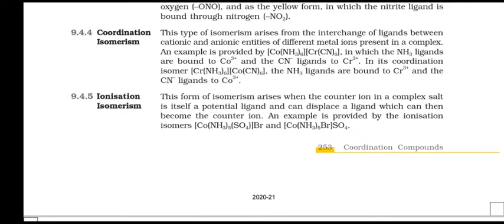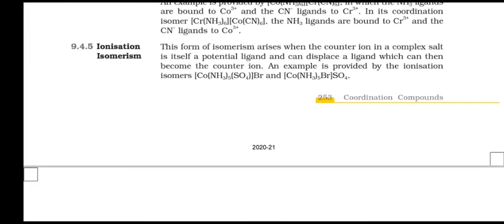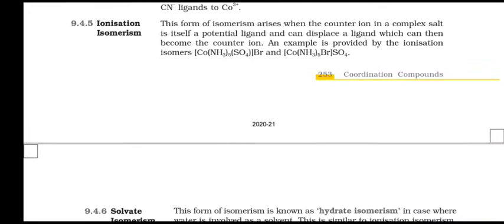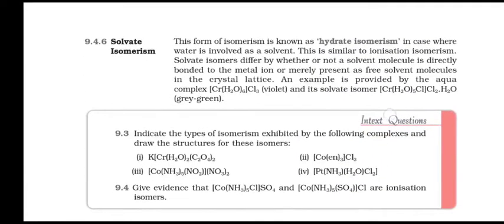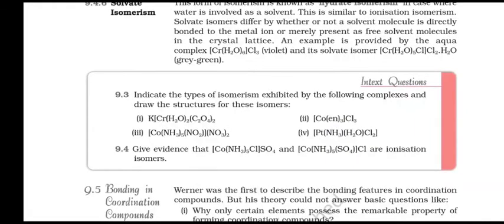Ionization Isomerism: This form of isomerism arises when the counter ion of a complex salt is itself a potential ligand and can displace a ligand which can then become the counter ion. An example is provided by [Co(NH3)5(SO4)]Br and [Co(NH3)5Br]SO4. Solvate Isomerism: Also known as hydrate isomerism when water is involved as the solvent. Solvate isomers differ by whether a solvent molecule is directly bonded to the metal ion or merely present as solvent molecules in the crystal lattice. An example is [Cr(H2O)6]Cl3 (violet) and its solvate isomer [Cr(H2O)5Cl]Cl2·H2O (grey-green).